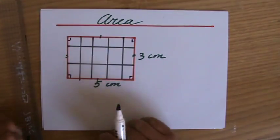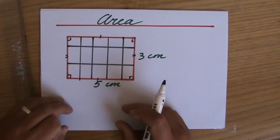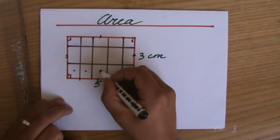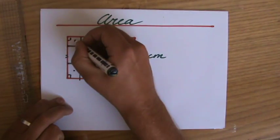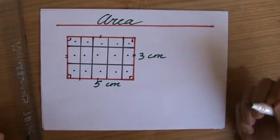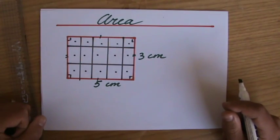How many blocks does my rectangle cover? Well, I have 1, 2, 3, 4, 5, 6, 7, 8, 9, 10, 11, 12, 13, 14, 15 blocks. The area is 15.